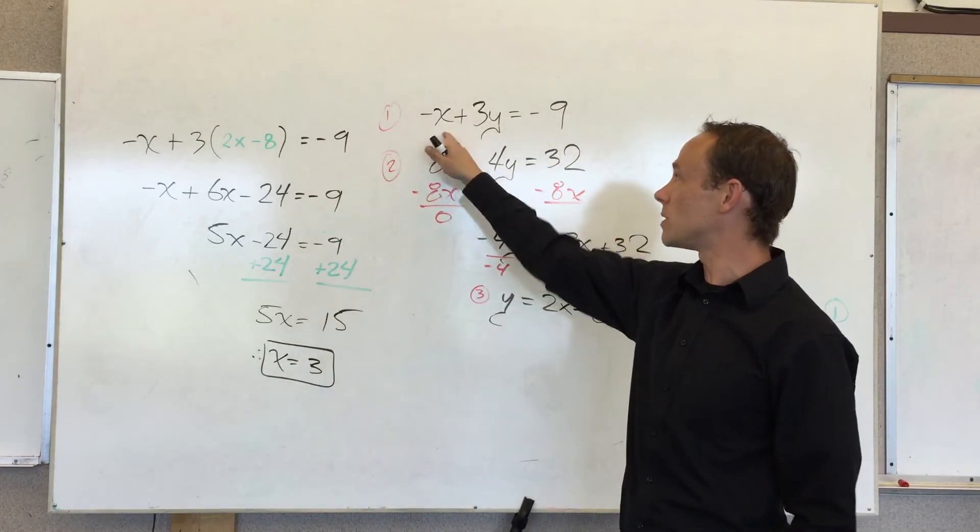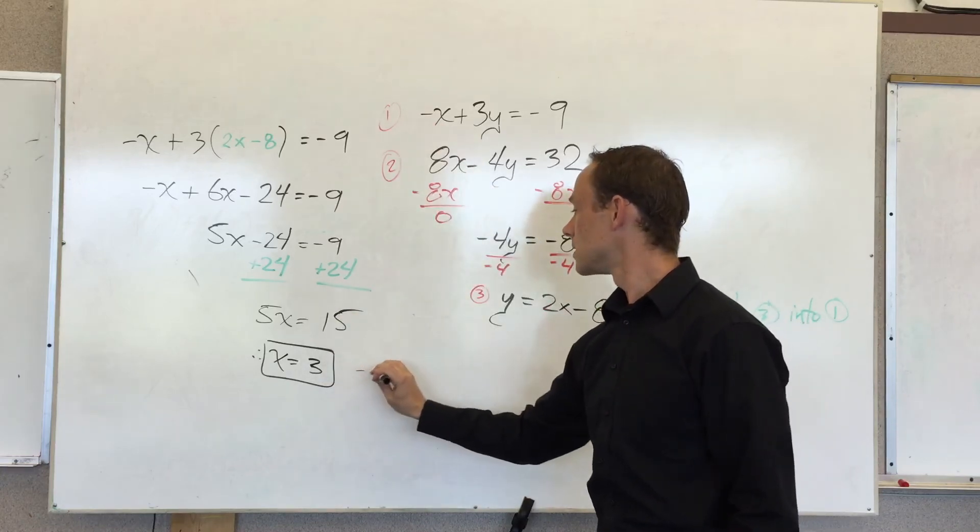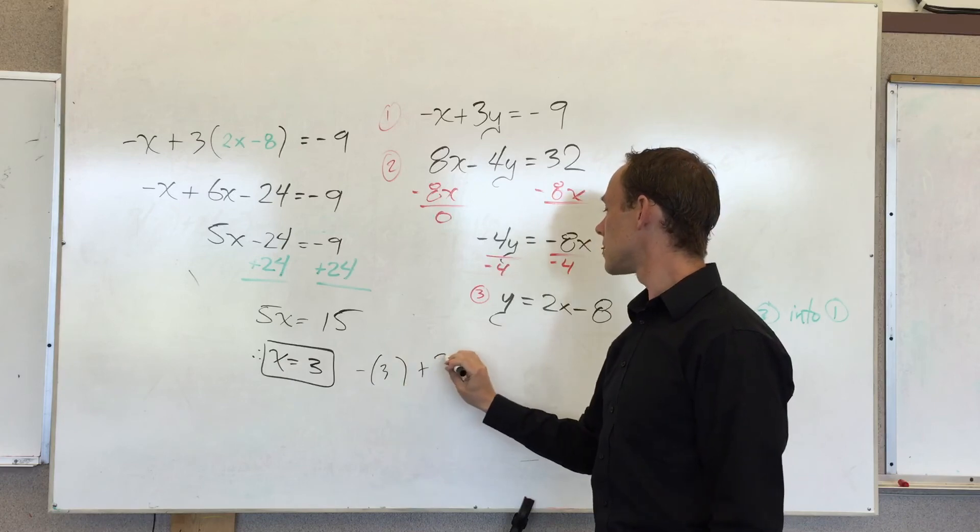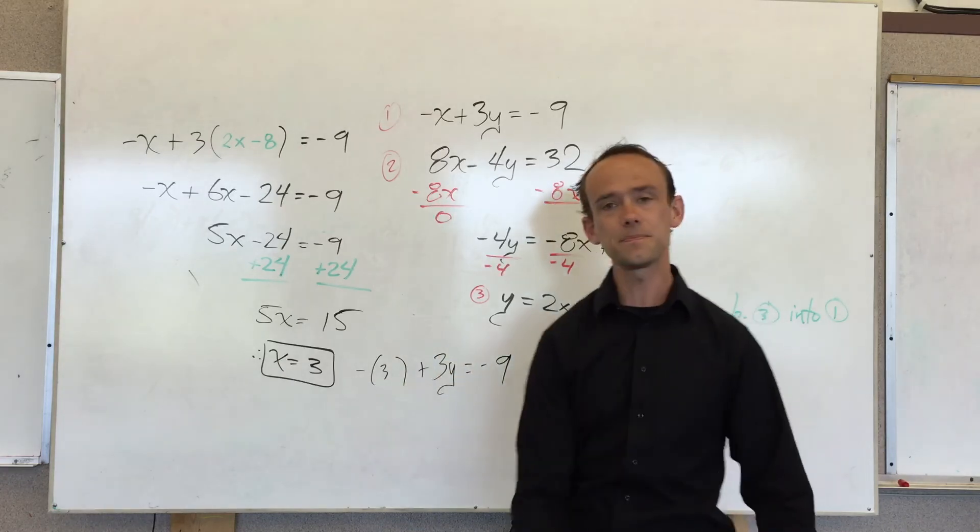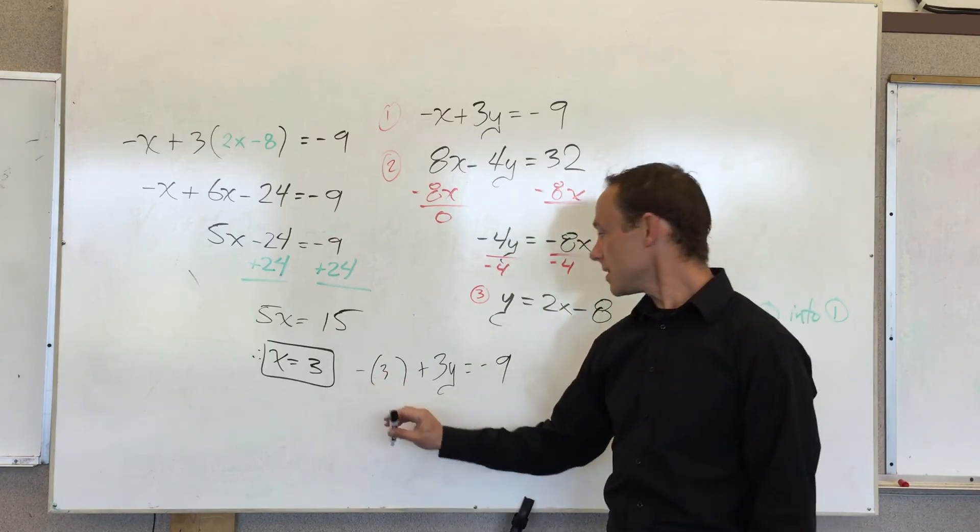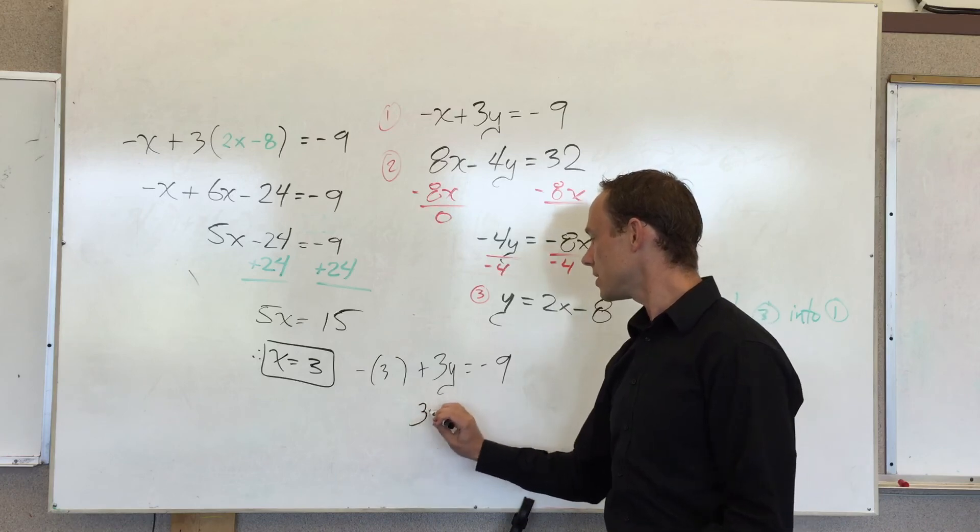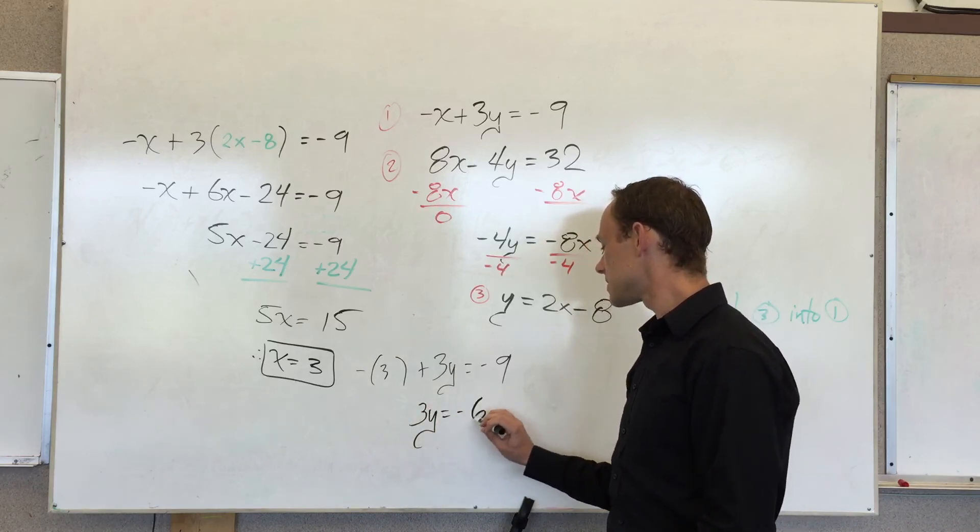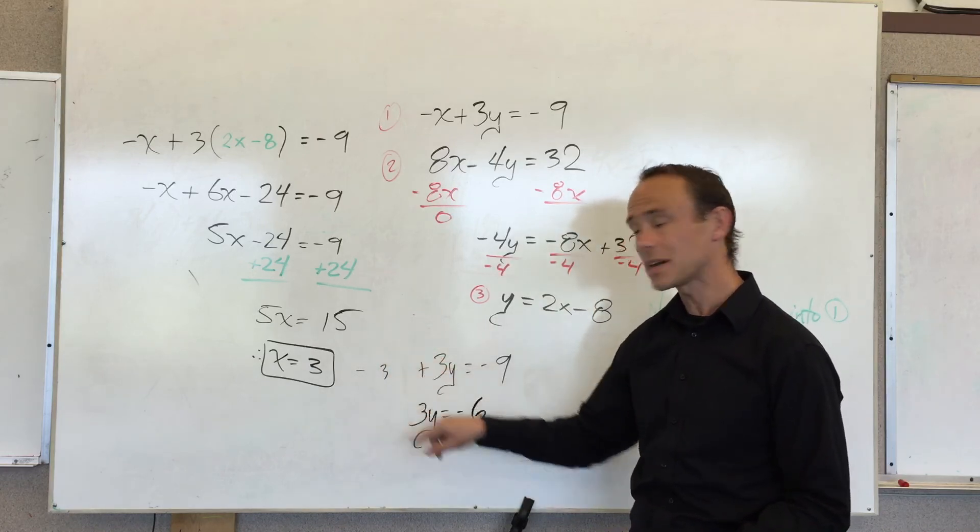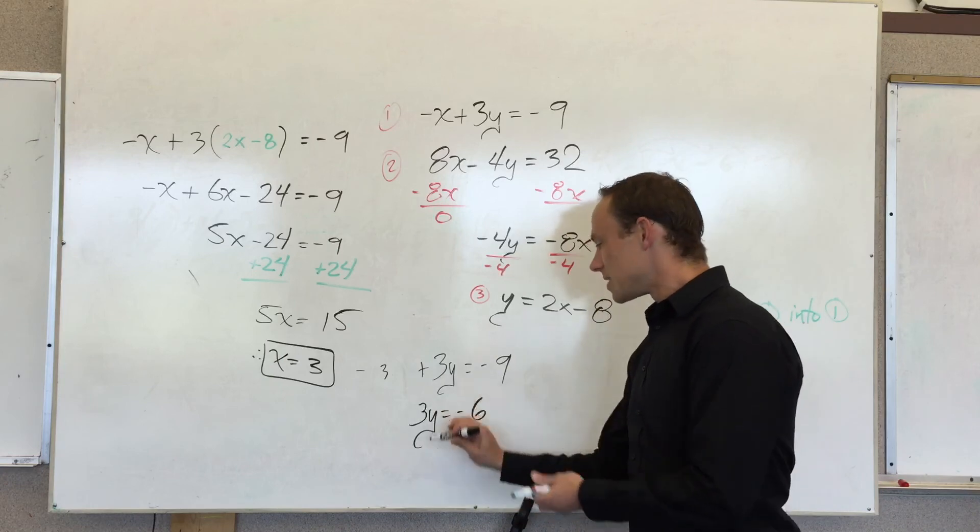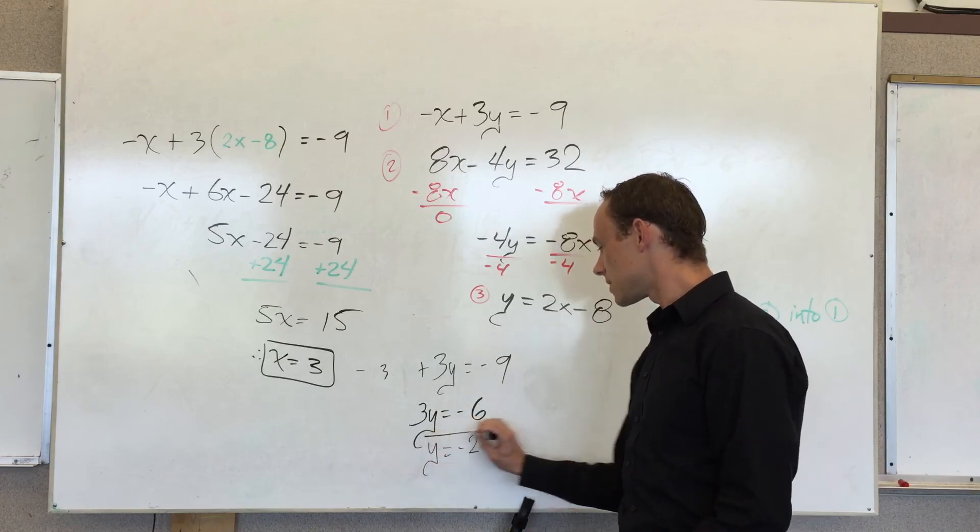So, I'm going to go back to equation number 1. And I'm going to substitute 3 in there for X. So, negative 3 plus 3Y is equal to negative 9. So, negative 3. I'm going to add 3 to both sides. I'm going to get 3Y is equal to negative 6. Because this is really, those parentheses aren't doing much at that point. So, I'm adding 3 to both sides. Divide both sides by 3. Y is equal to negative 2.